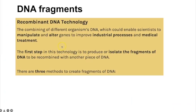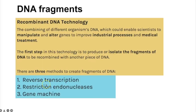Recombinant DNA technology means recombining the DNA of two different species, enabling scientists to manipulate and alter genes to improve industrial processes and medical treatments — for example, manipulating bacterial DNA so it can produce human insulin. The first step is isolating the DNA fragment you want to recombine or insert into another organism's DNA. There are three methods: reverse transcription, restriction endonucleases, and the gene machine.